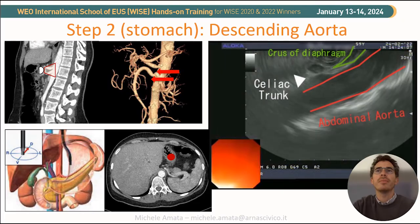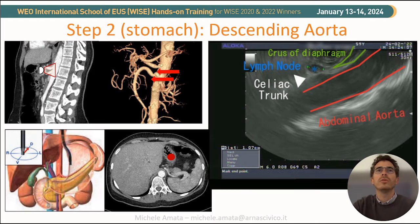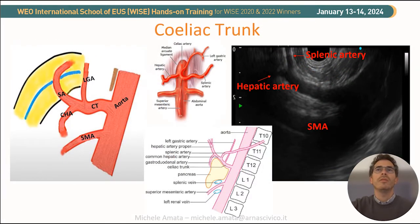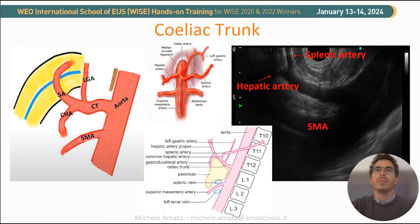This step is extremely important to define the proper location and the boundary of structures — for example, a lymph node — to distinguish if it is a thoracic mediastinal or abdominal node. Using soft movements, we then need to follow the trifurcation of the celiac trunk, which divides into the left gastric artery, splenic artery, and common hepatic artery. It is possible to visualize the superior mesenteric artery, but this is not always imaged simultaneously because they are not always in the same plane.